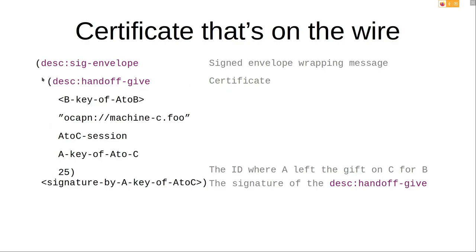Looking at quasi-real data: the handoff give contains an OCapN URI, the session name and key, and the gift ID 25. Importantly, there is also a signature made by A using A's A-to-C key — not the A-to-B key. This is so that when C eventually receives this certificate, C is able to verify that A actually made this certificate.